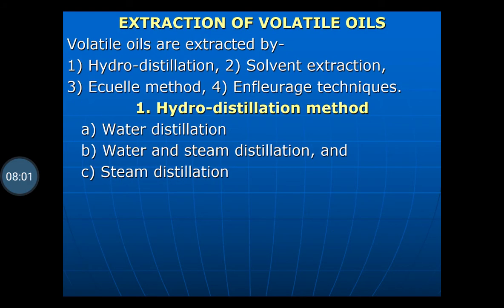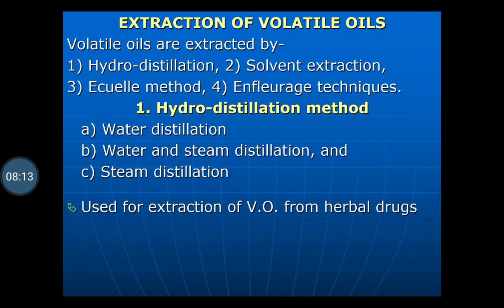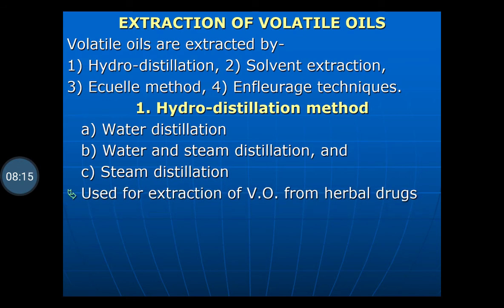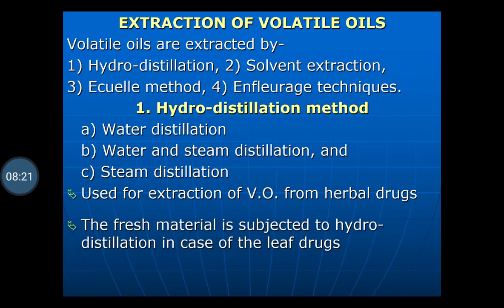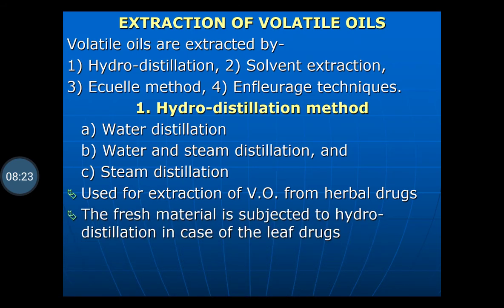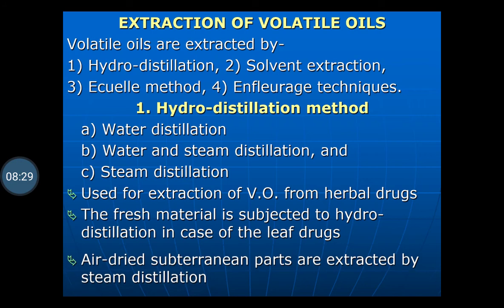We will see about the extraction of the volatile oil. Volatile oils are extracted by the hydrodistillation method, solvent extraction method, the ecuelle method, and the enfleurage technique. So the extraction of the volatile oil is done by these four techniques: hydrodistillation, solvent extraction, ecuelle method, and enfleurage method.